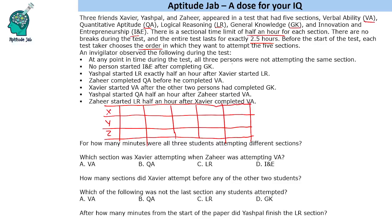All three persons were not attempting the same section — that is the least important point. No person started I&E after completing GK. So that means I&E will come first and then GK will come. We can have a gap of any number of subjects in between, but I&E should precede GK.